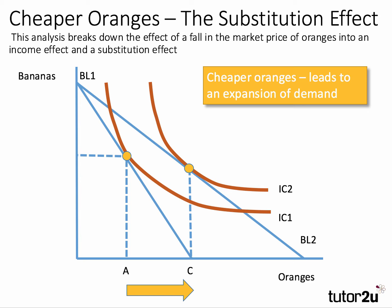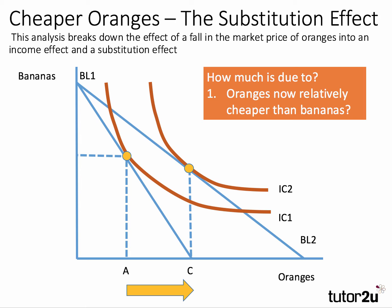We're now going to break down the total effect — which is A to C — into two component parts. First, we need to show the substitution effect, and to do this we isolate or eliminate the income effect. We need to ask: how much of the increase in demand for oranges is due to the fact that oranges are now relatively cheaper than bananas? Real income has increased with the price fall, so we need to isolate that real income effect.